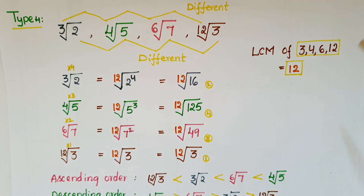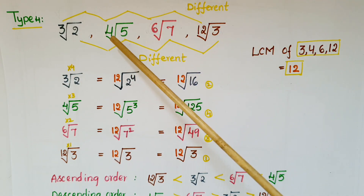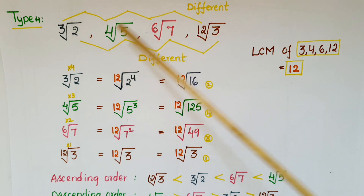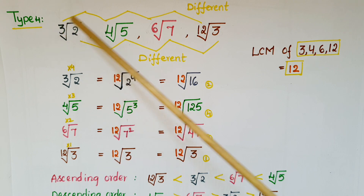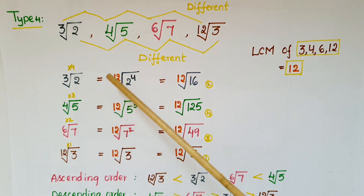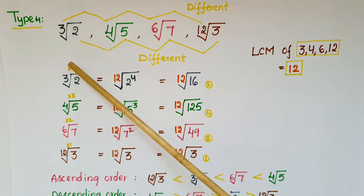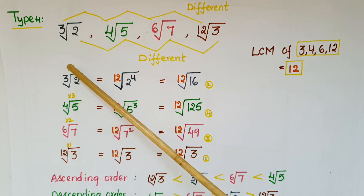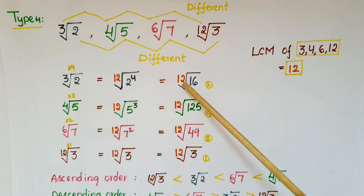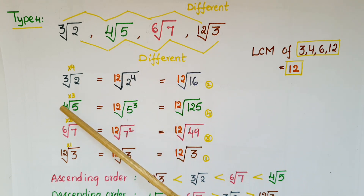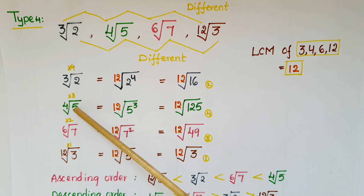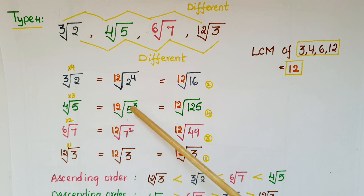This is another type of problem: cube root of 2, fourth root of 5, sixth root of 7, twelfth root of 3. All roots are different, so first find the LCM of 3, 4, 6, and 12 — that is 12. Cube root of 2: since 3 times 4 equals 12, raise the power of 2 to 4, giving 12th root of 2 to the power of 4, which equals 12th root of 16. Fourth root of 5: since 4 times 3 equals 12, raise the power of 5 to 3, giving 12th root of 5 cubed, which equals 12th root of 125.